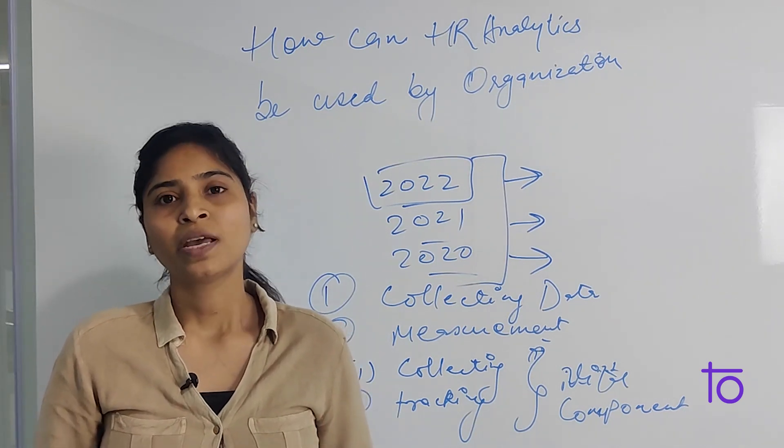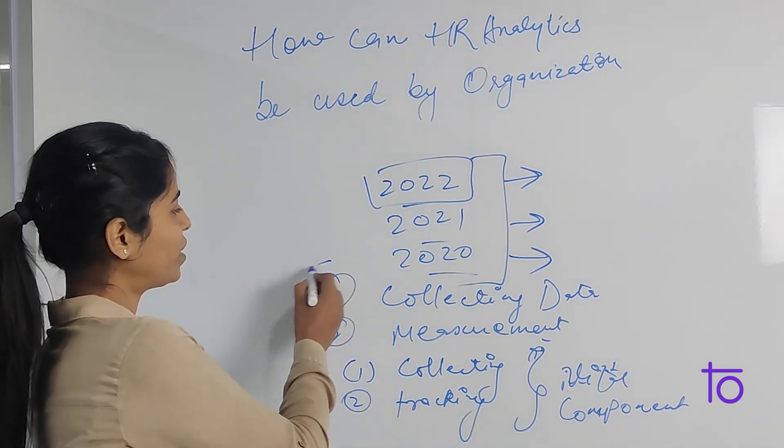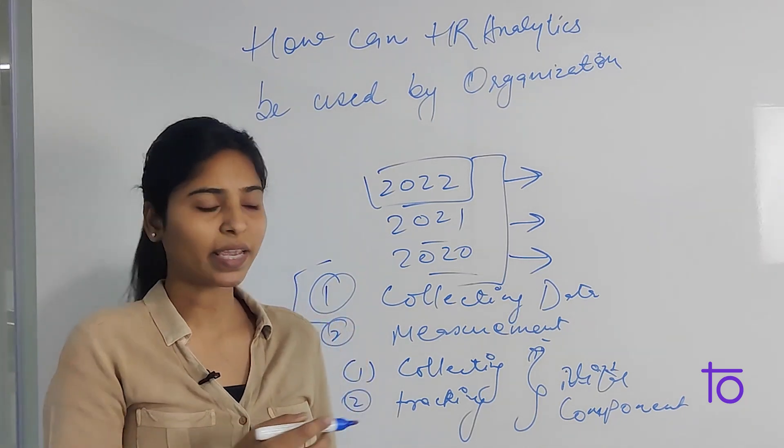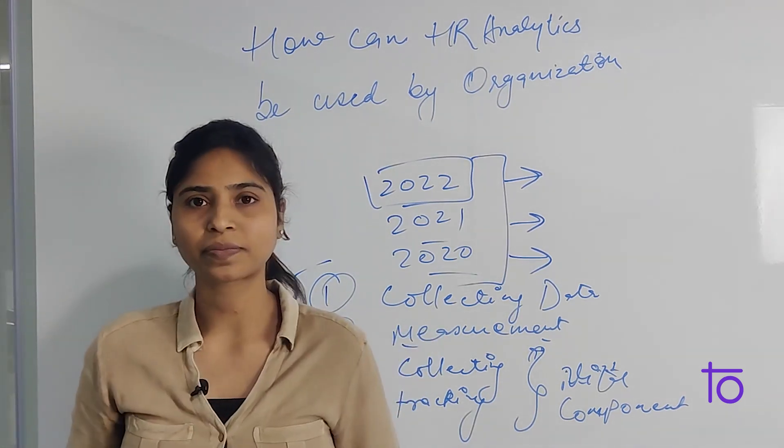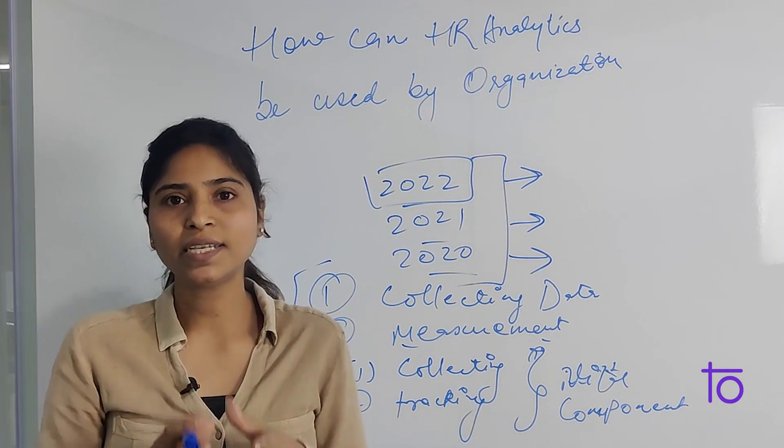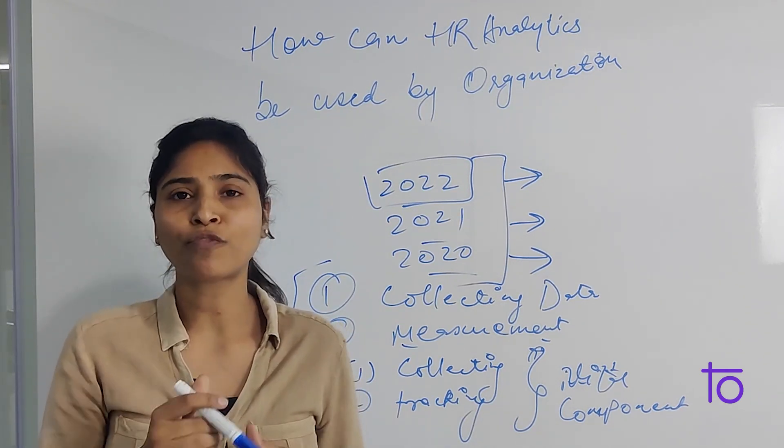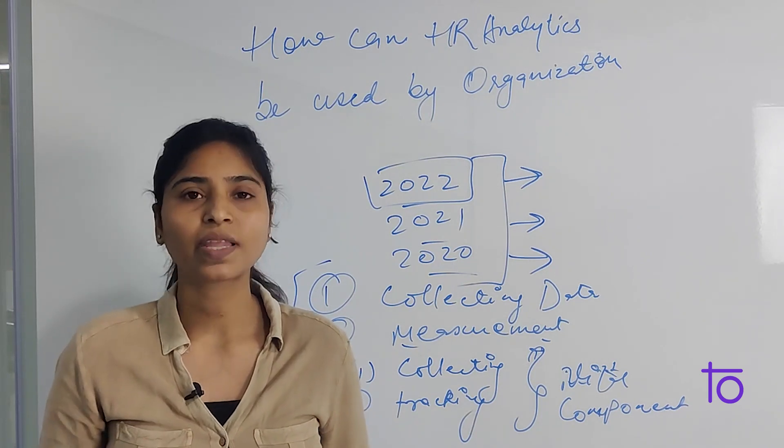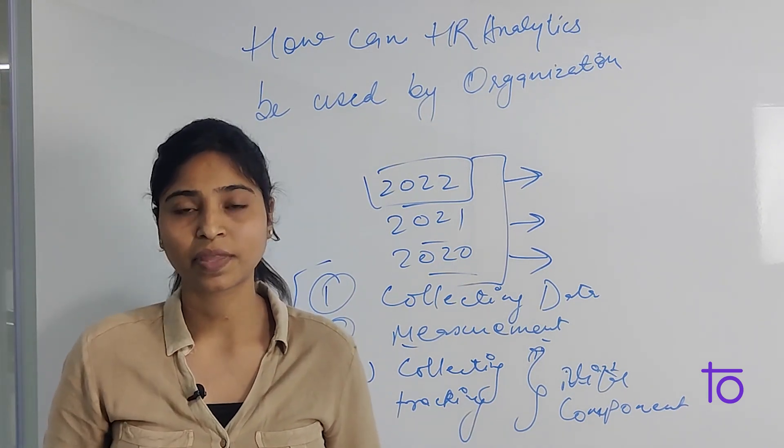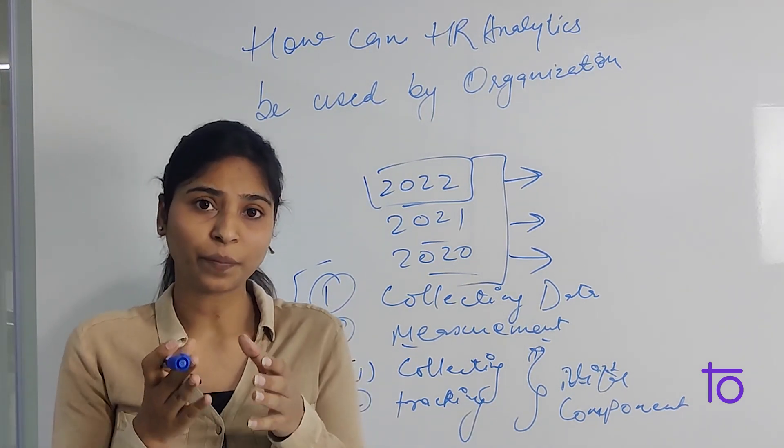I hope the collection of data point is clear. Now the second point is measurement. At this stage, the collected data begins the process of continuous measurement and comparison, and this is also known as metrics.